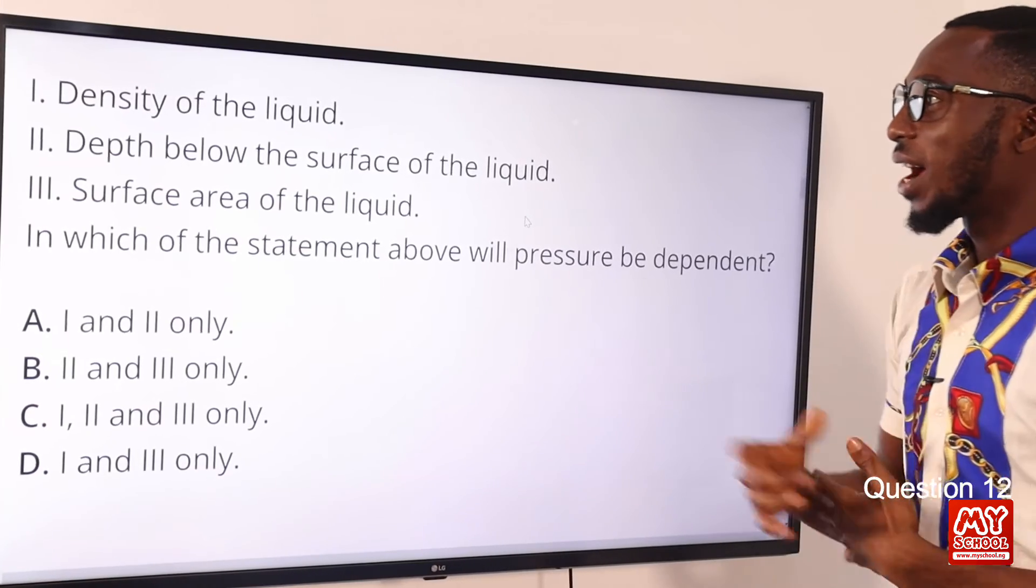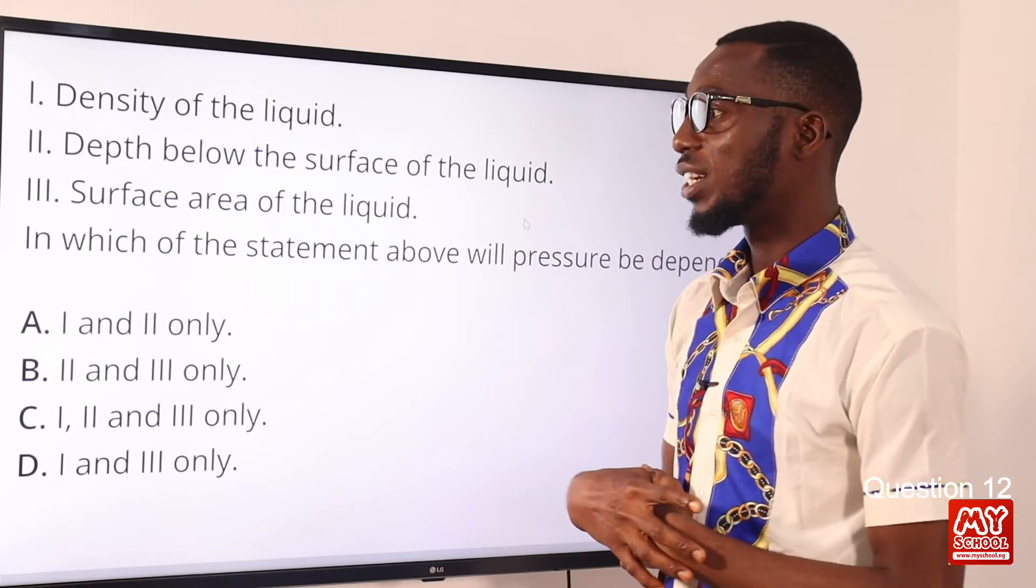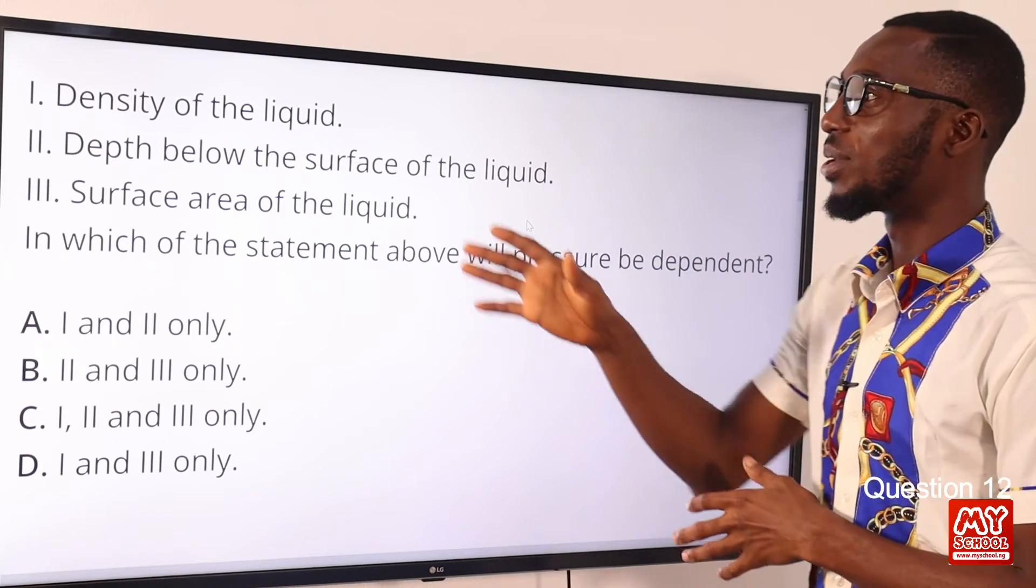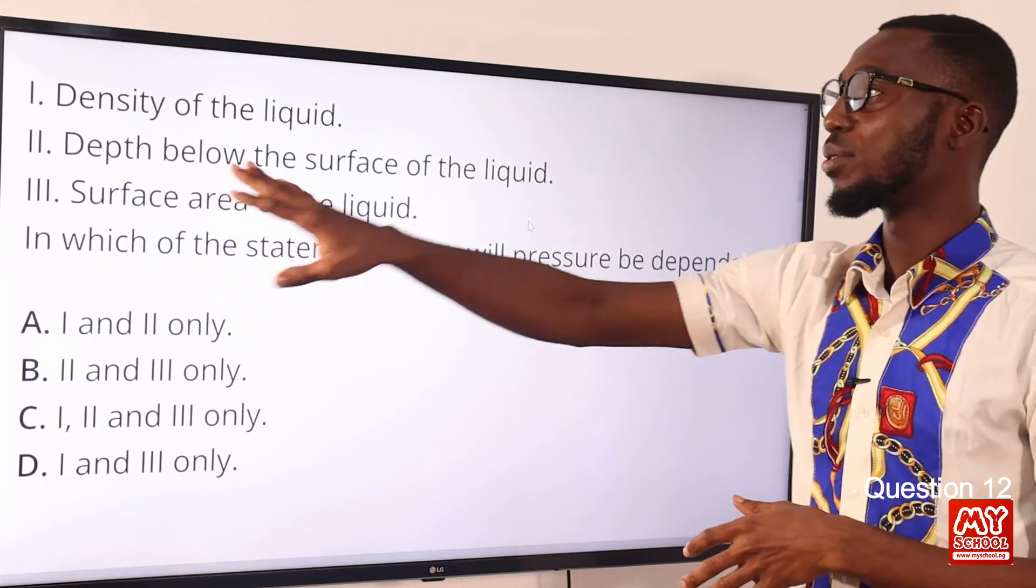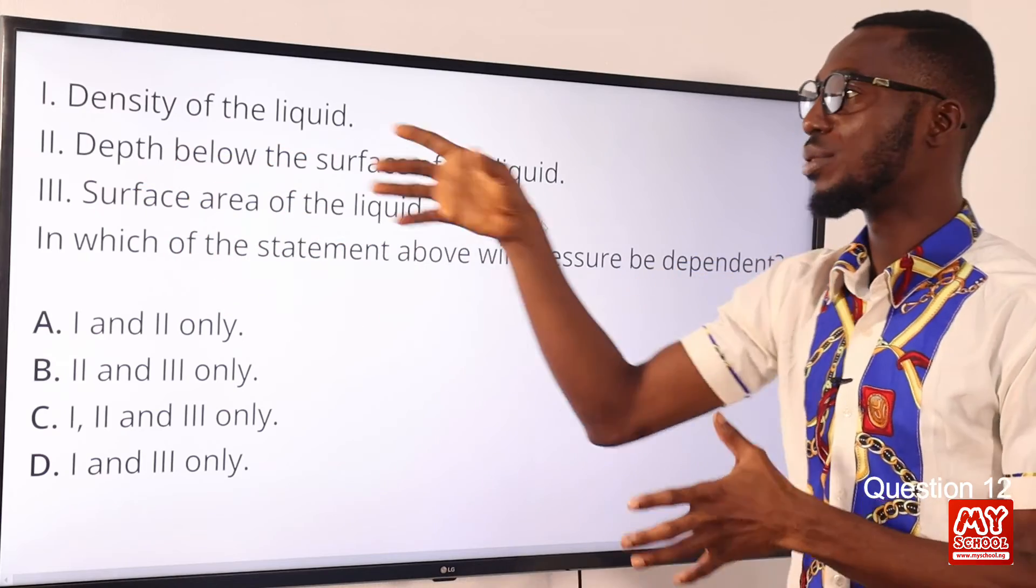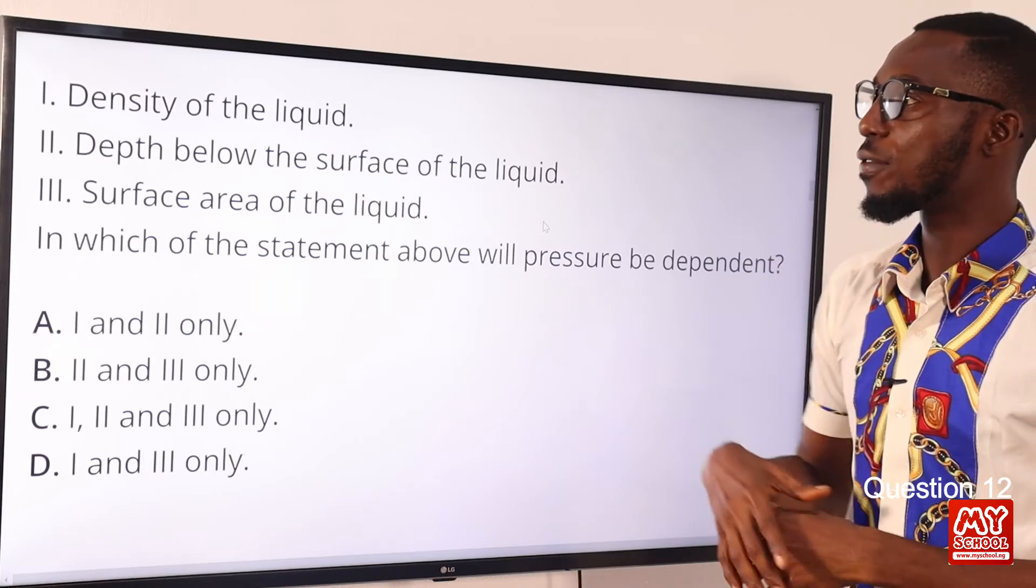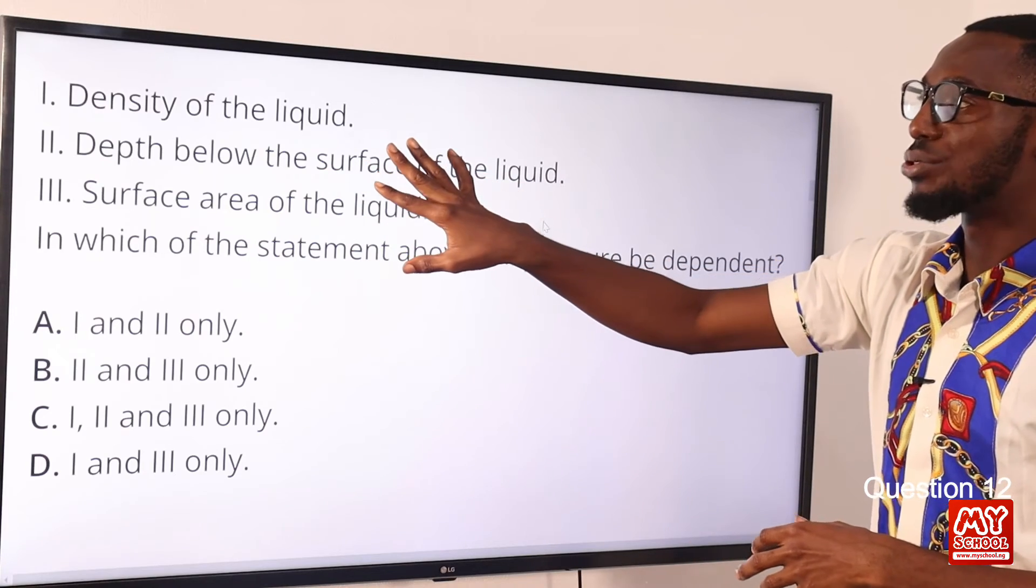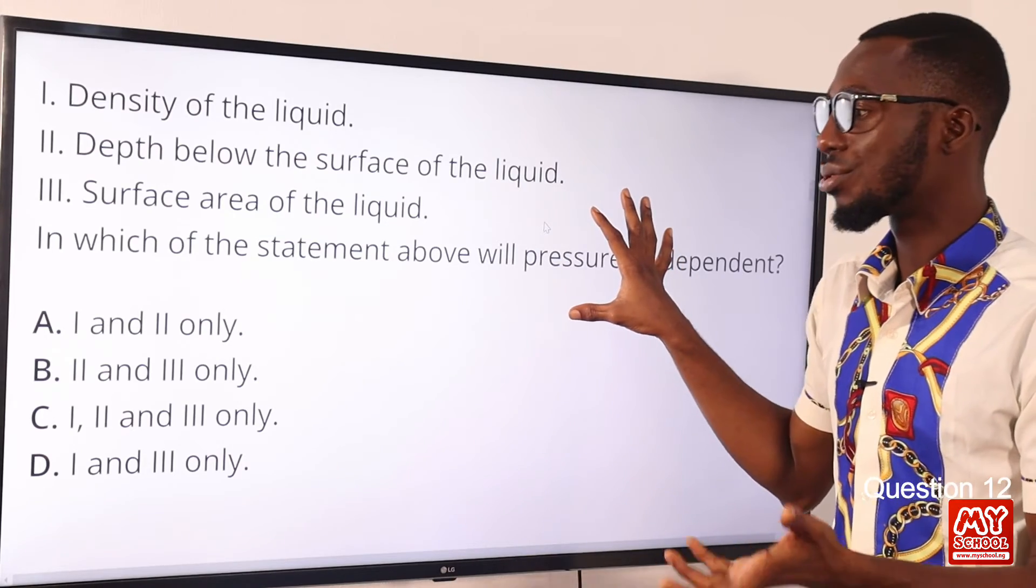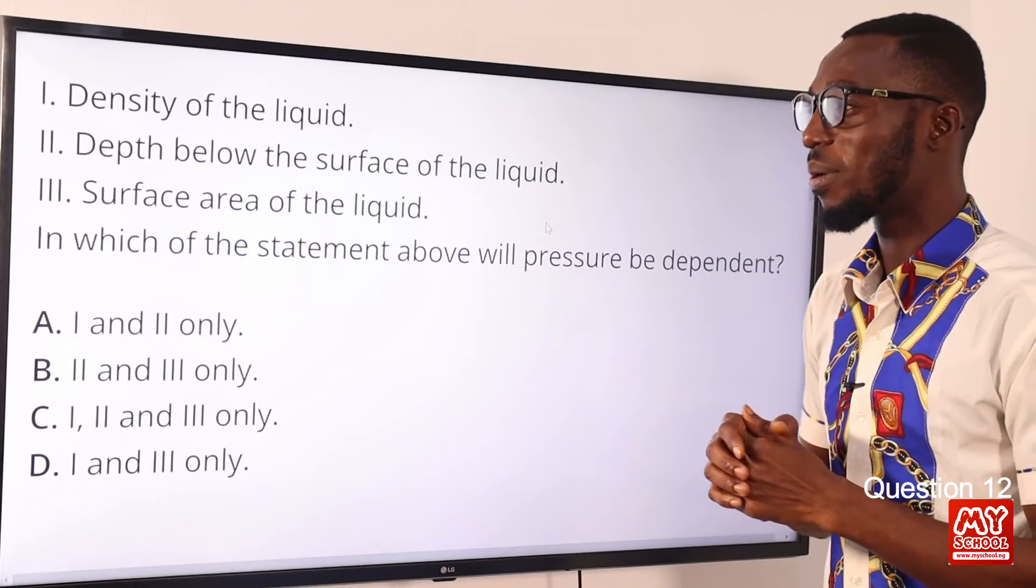Question 12. So we have density of the liquid, we have depth below the surface of the liquid, we have surface area of the liquid. So in which of the statements above will pressure be dependent? So pressure is dependent on density of the liquid and depth. So if you want to take into account the factor regarding depth, the deeper you go, the more pressure you feel. So for a liquid, this is of course statements 1 and 2. They are correct concerning pressure or they are what pressure depends on. So statements 1 and 2, where can we find that? We can find that in option A. So option A is the correct option to question 12.